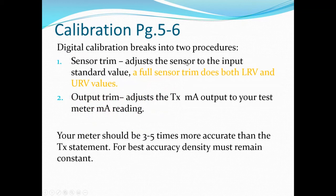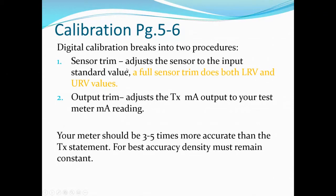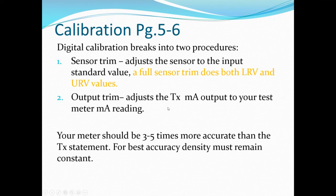Digital calibration has two procedures. The first is sensor trim, which adjusts the sensor to the input standard value. A full sensor trim does both lower and upper range values — applying zero pressure and full range pressure to calibrate your 4–20 mA output. The second method is output trim, adjusting your transmitter and meter readings to be correct — not very common anymore because transmitters are quite accurate these days.